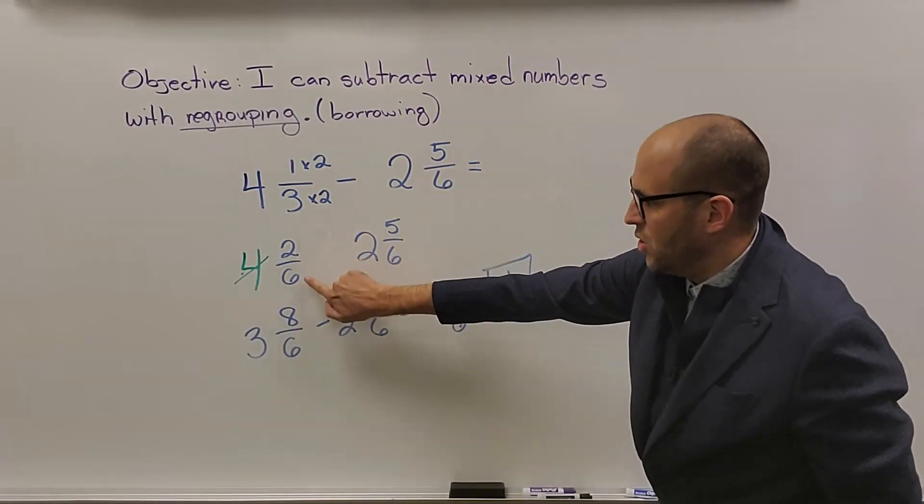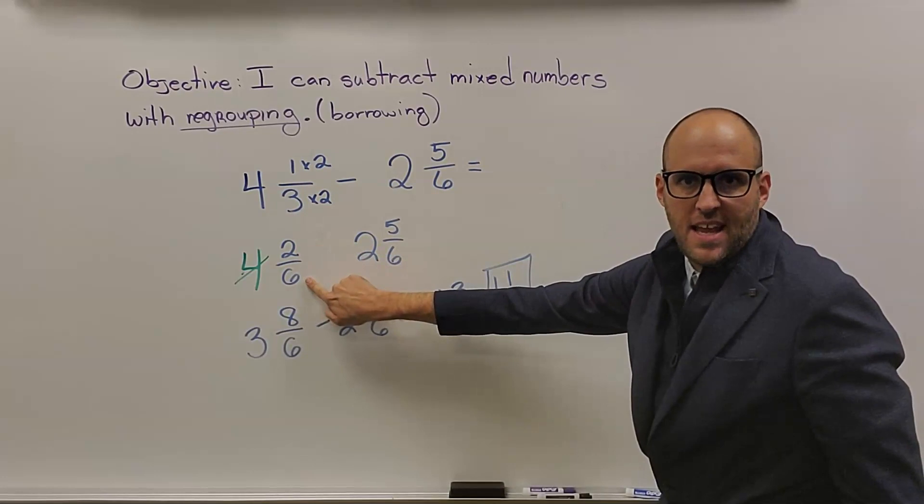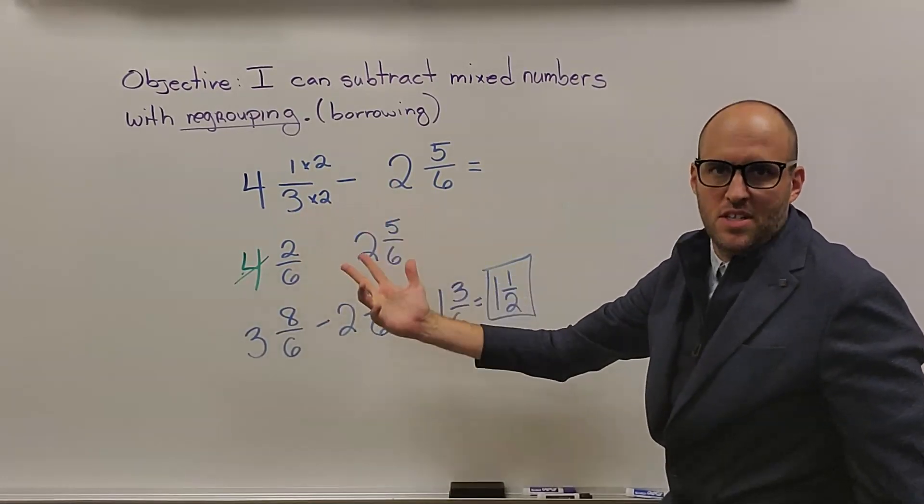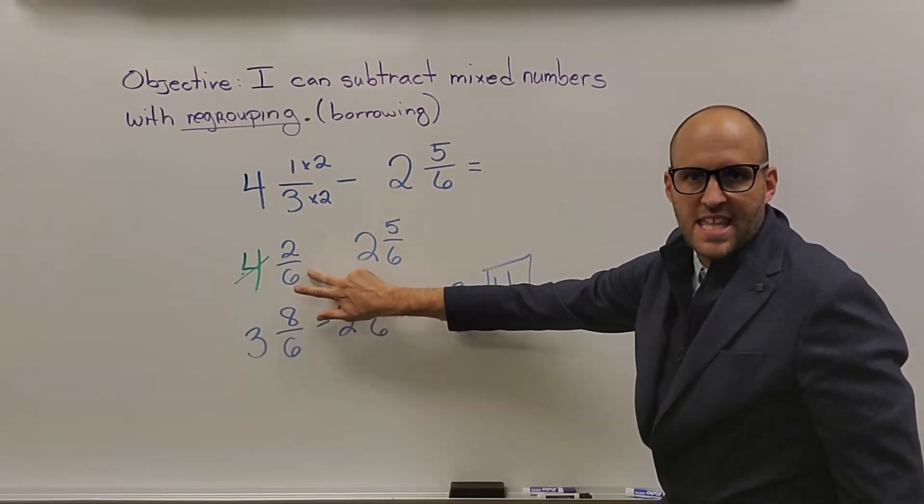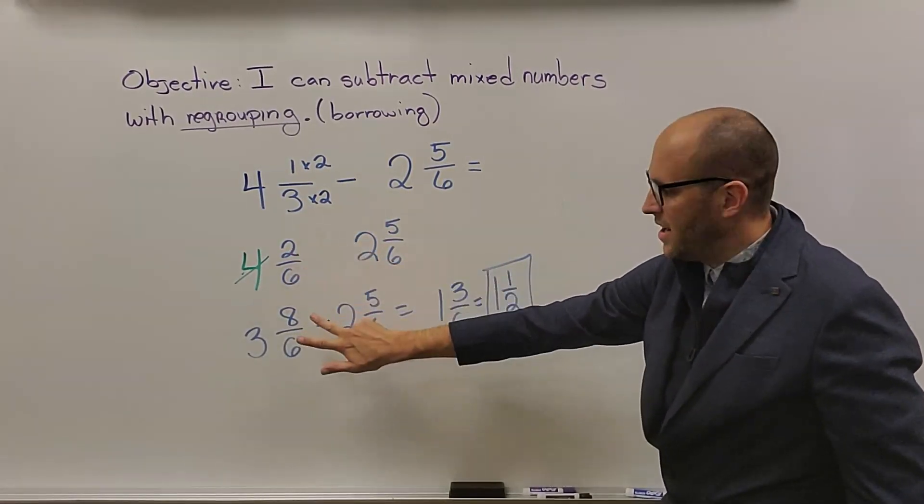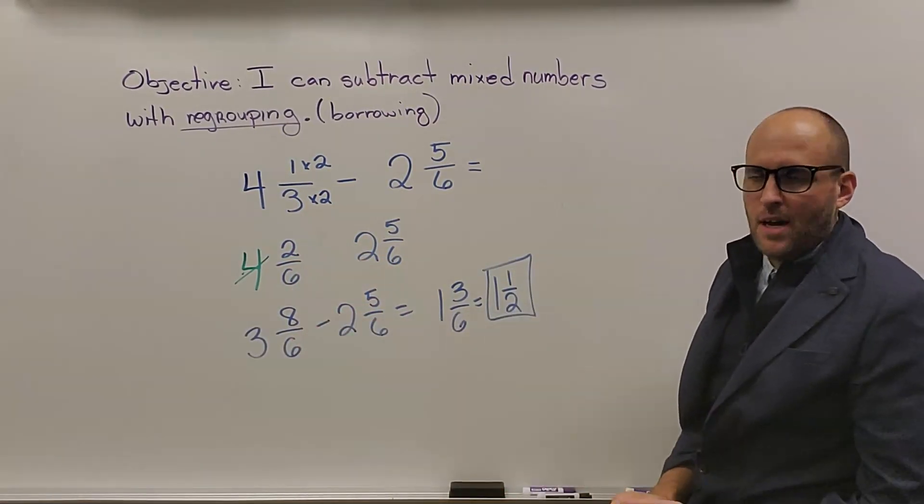Take your 6, add 2. Not every problem is going to have a 6 there. If you had an 8 there, it would have been 8 plus 2. So whatever your denominator is there when you're borrowing, you take that, add it to your numerator, and that becomes your new top number.